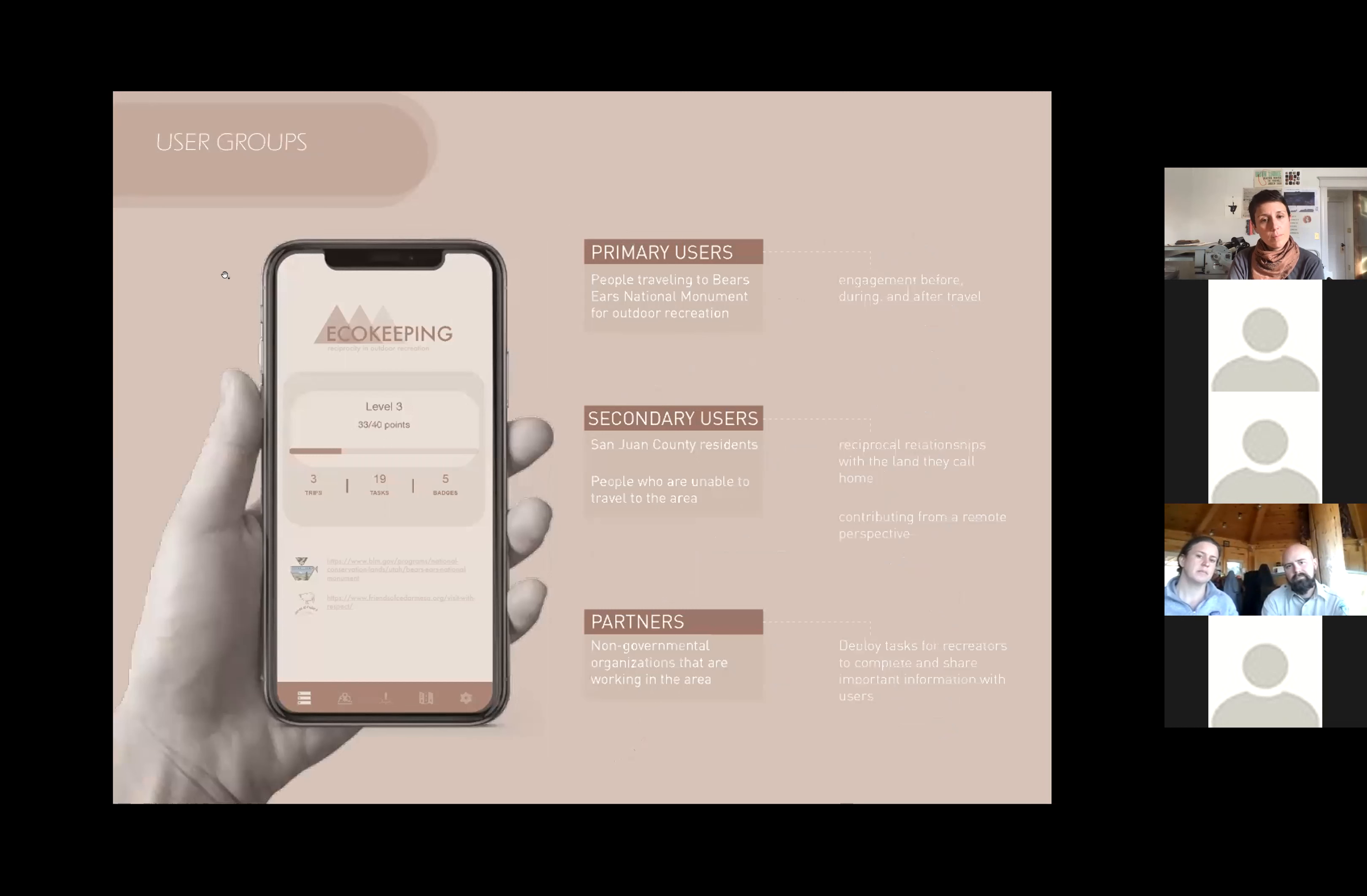The primary users of this platform would be people who are interested in traveling to Bears Ears National Monument for outdoor recreation. There could also be secondary user groups, including anyone who's interested in having some impact in the area, whether that be someone that lives there already or someone who is unable to physically visit. Partners of the app would include organizations who work in the area, such as Friends of Cedar Mesa and the Southern Utah Wilderness Alliance, who could not only offer useful information, but could also create tasks for recreators to partake in while exploring the area.